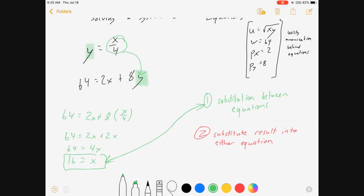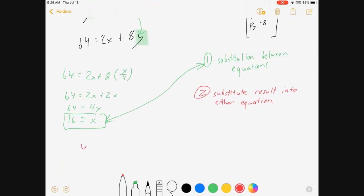Now step two is I'm going to substitute that result into either one of the equations. It does not matter. I'll do the easy one first, but then I'll verify with the harder one. Let's see: y is equal to x over 4, 16 over 4. I substituted this result in for x. y is equal to 4. Yay, we're done!